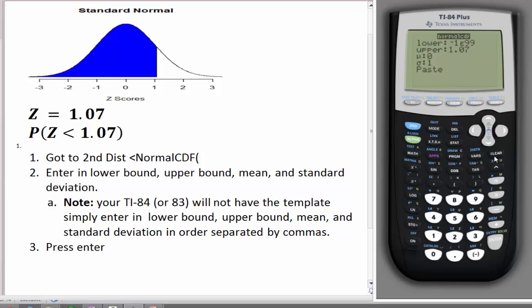Press Enter, or scroll down, and put in the upper bound, 1.07. This is the z-score that we want to find the area below. Then you'll enter in your mean, which in this case is 0, because it's standard normal distribution, and the standard deviation. In this case, again, it's 1.